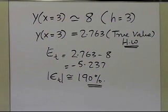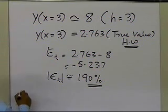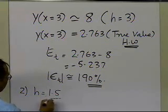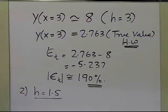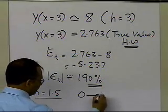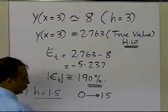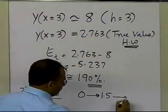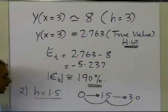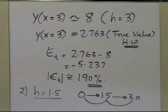The question arises: how do I make this true error smaller? The simple answer is to make h a smaller number. If I choose h equal to 1.5, starting from 0, in one step I'll reach 1.5, and in the next step I'll reach 3.0. So it will take me two steps to find the value of y at x equal to 3.